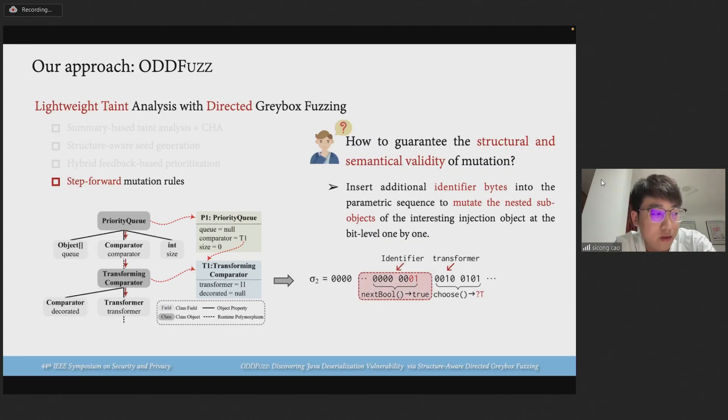To guide the seeds towards a desired sink method, we insert additional identifier bytes with the method random next bool into the parametric sequence of an injection object to mark whether to mutate the property values of this nested object. Based on this step-forward mutation strategy, the fuzzer can effectively generate semantics-aware inputs which are more likely to reach the target sink.